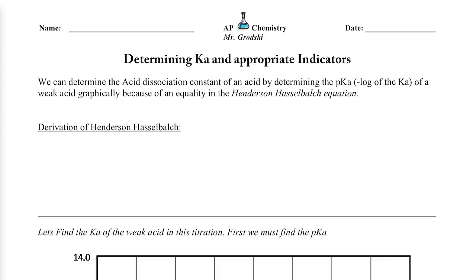Let's get started going over this worksheet. This is a very important worksheet, and in this particular one we're working with a new skill: determining the Ka of an acid using our titration curves from the lab. The Ka is a number we want when dealing with weak acids, because they don't completely dissociate. To understand how we obtain a Ka from an acid, we need an important formula called Henderson-Hasselbalch, which we'll derive from our understanding of how acids dissociate and our basic understanding of equilibrium.